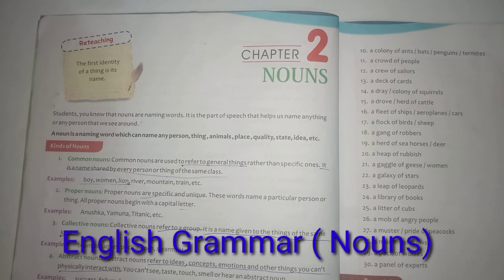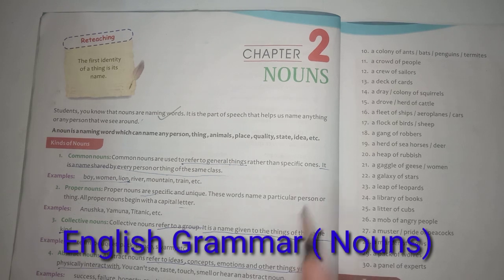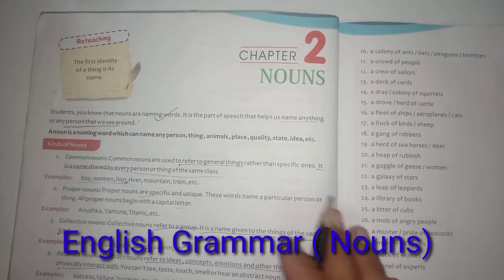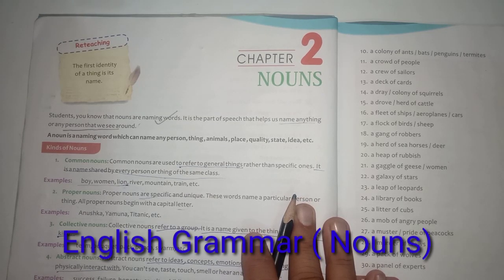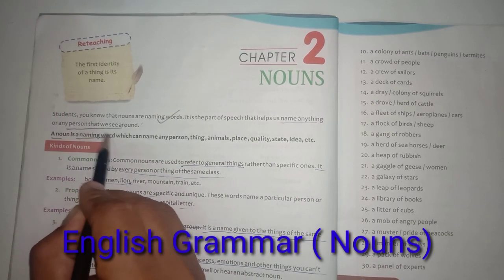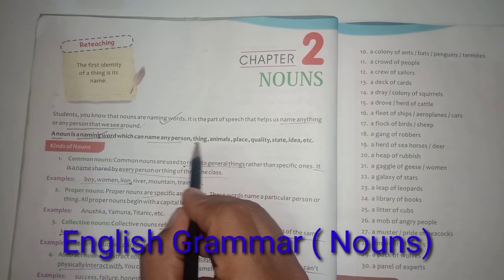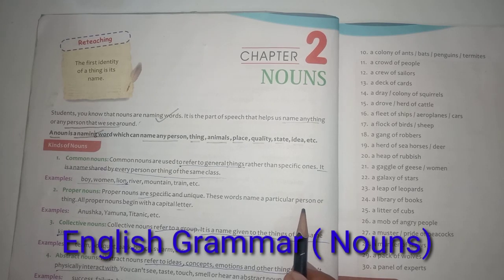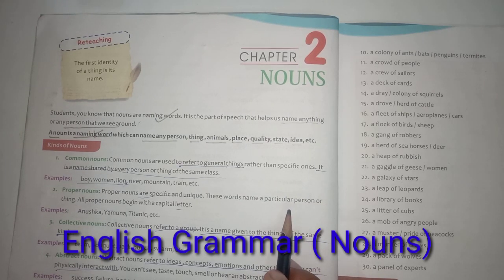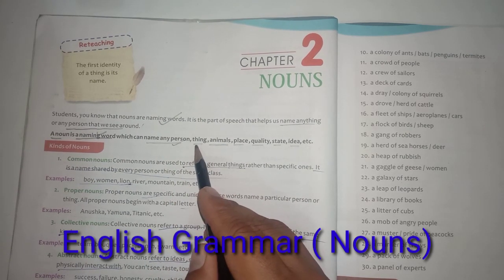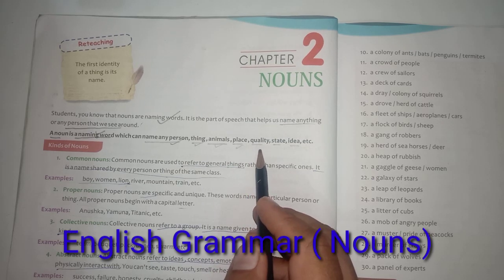Students, you know that nouns are the naming words, and it is a part of speech that helps us name anything or any person that we see around. We use noun for naming anything in our surroundings — it could be any object, any place, or any person. Noun is a naming word which can name any person, thing, animal, place, quality, state, idea, and many other things.